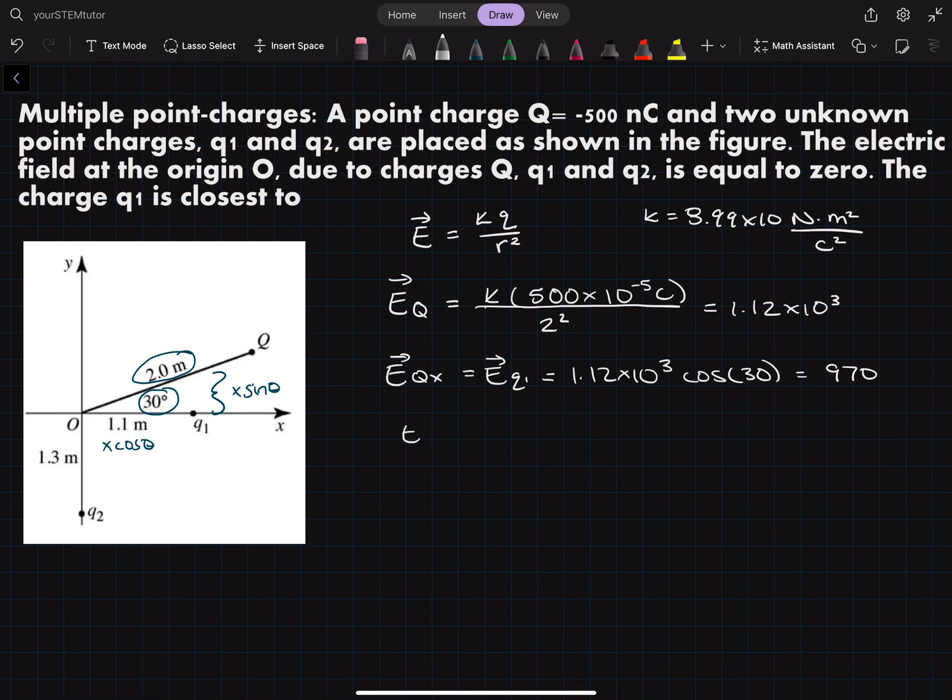So since E_q1 is equal to 970 and it's also equal to k times q1 over r squared, we can transform this equation to make it solve for q1.